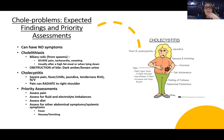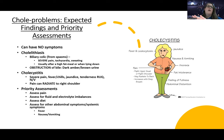Another thing you might notice with a patient with gallstone issues is dark amber or brown urine. That's from the stone creating an obstruction that leads to bile getting sequestered, causing urine and stools to change color — because they don't have the ingredients they need to make them the color they normally are, since the bile is obstructed.